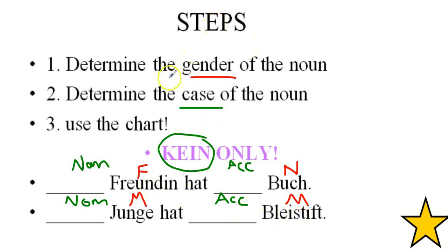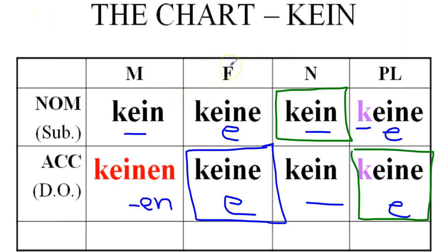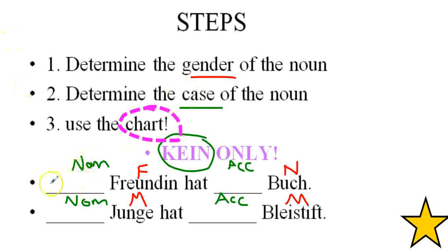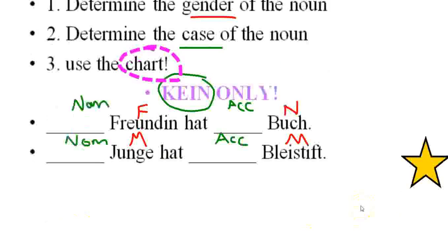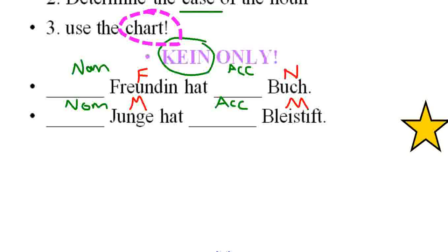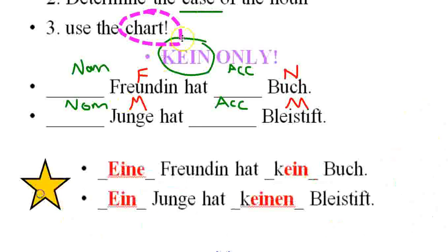Now that we know those elements, we can go ahead and examine the chart. So feminine nominative, for example, gives us keine. And then you figure out the rest. Use the chart. And you can check these. Of course I made a mistake. I said use kein. So, keine Freundin hat kein Buch. Kein Junge hat keinen Bleistift.